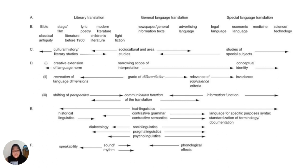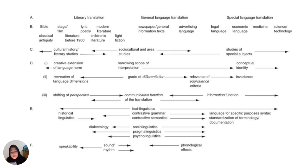Level B indicates prototypical basic text types. For example, for literary translation there is the Bible, stage, film, lyric poetry, modern literature, and others. On the right is fiction, which begins to merge into the newspaper or general information type of general language.